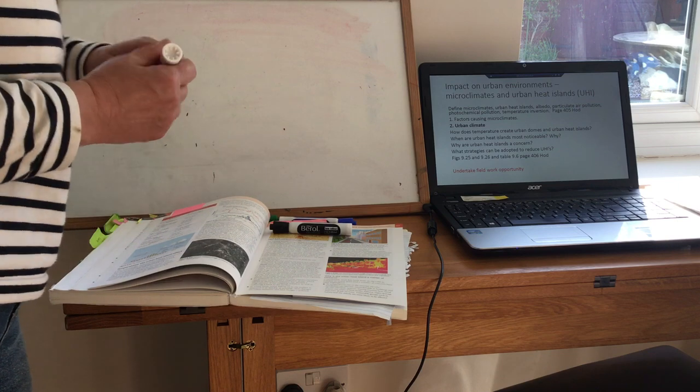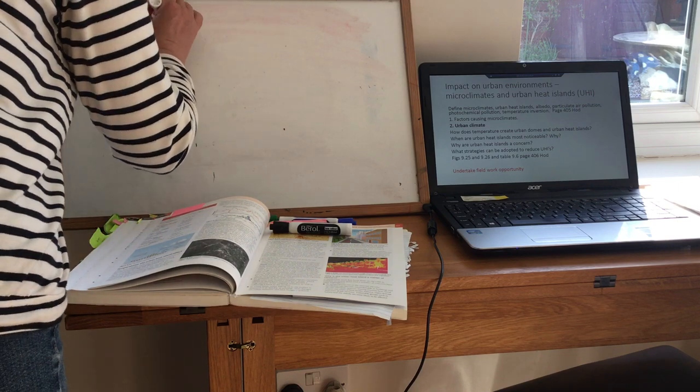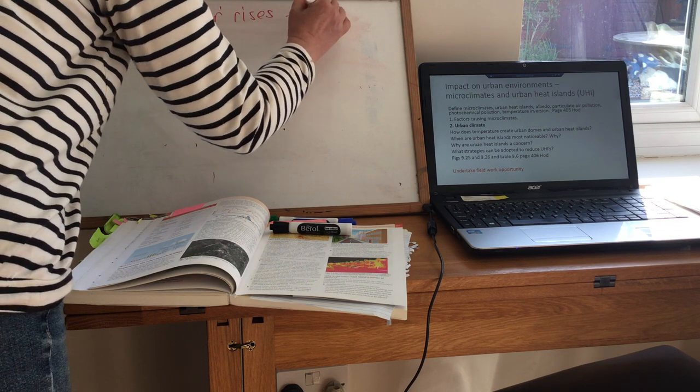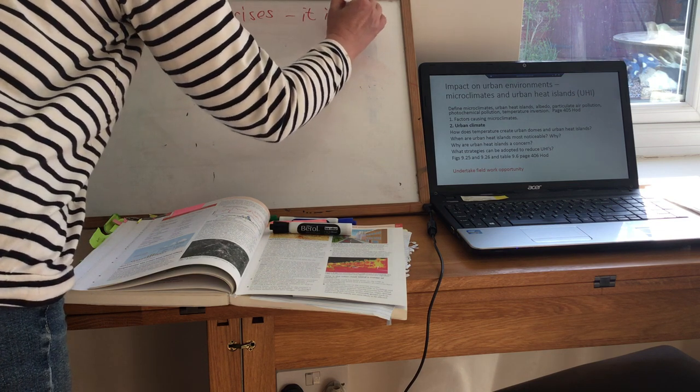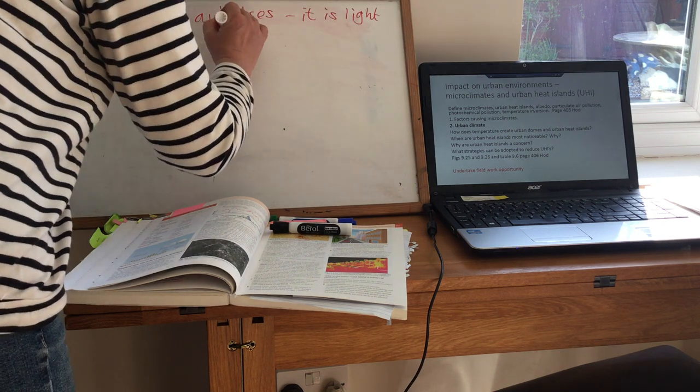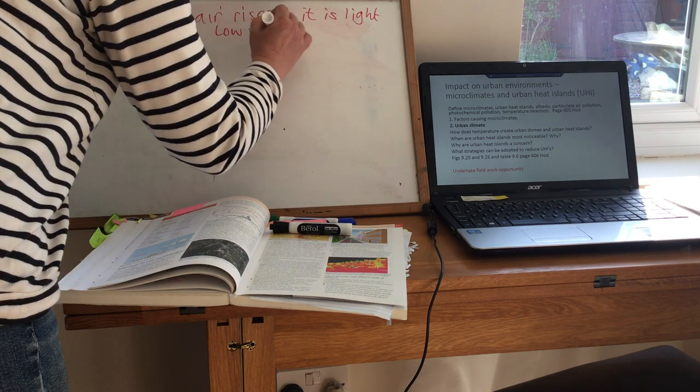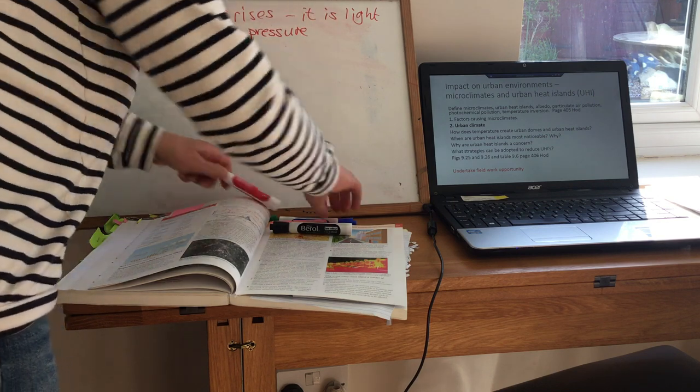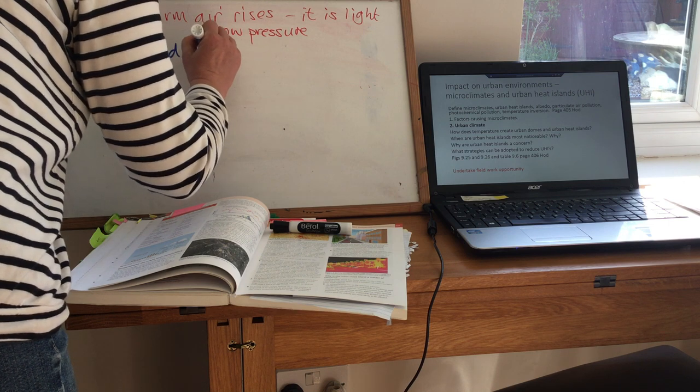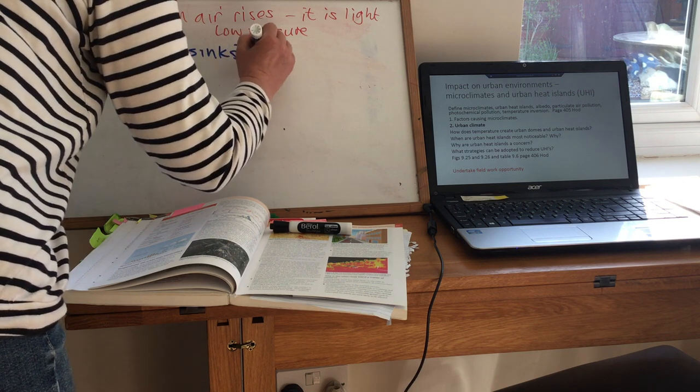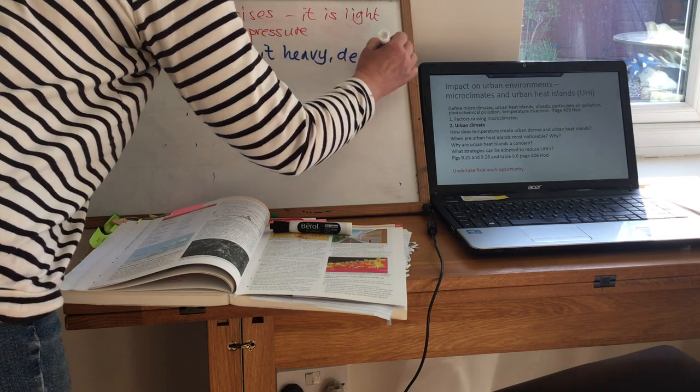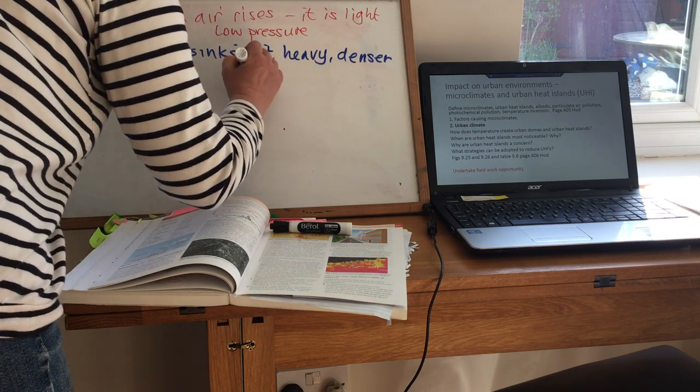And those two principles are: warm air rises. It is light, which means that at the surface of the earth you then get low pressure. Cold air sinks because it is heavy, it is denser, which means that on the earth's surface you then get high pressure.